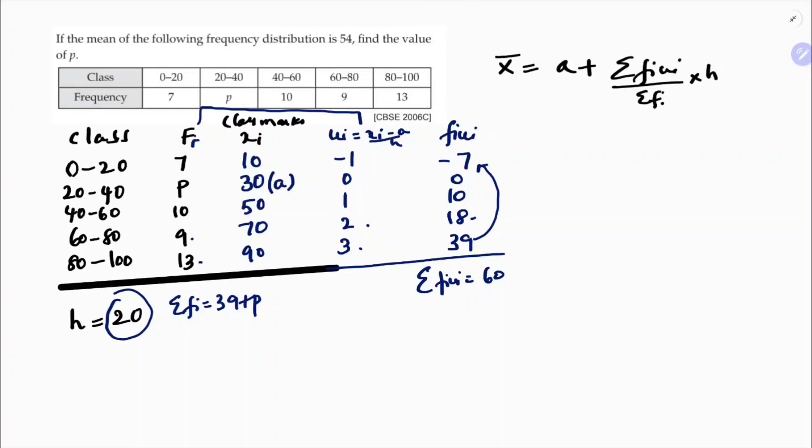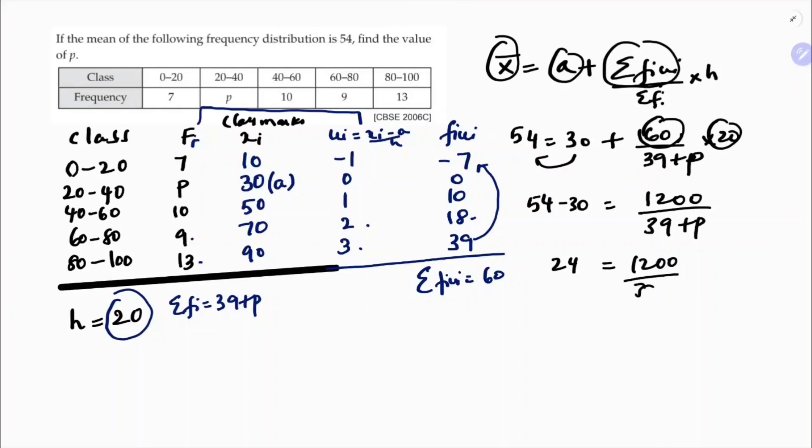Now substitute here. Mean value is 54. A is 30. Sigma fi ui value I got like 60. Sigma fi is 39 plus p, into h value is 20. So here if we will transpose, 54 minus 30, 60 into 20, that is 1200 by 39 plus p. 54 minus 30 is 24 equals 1200 by 39 plus p.